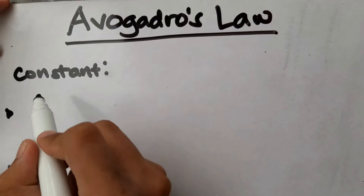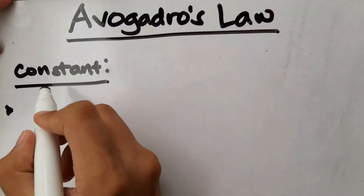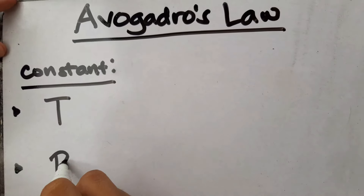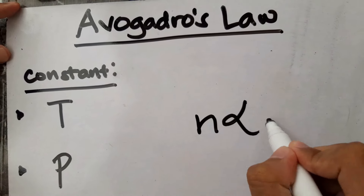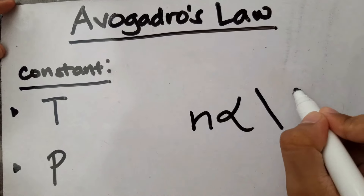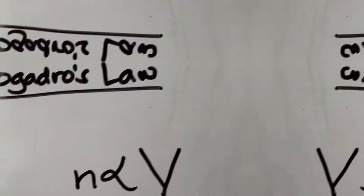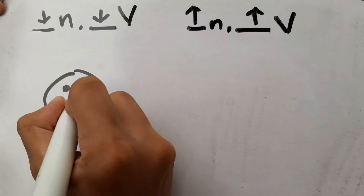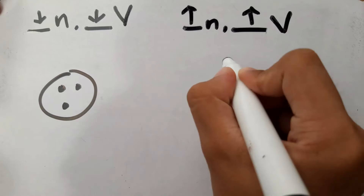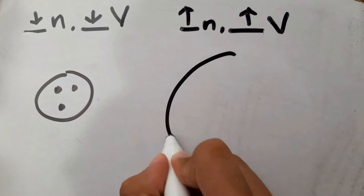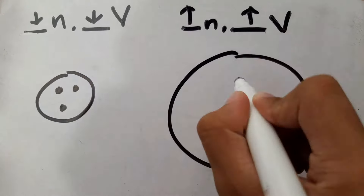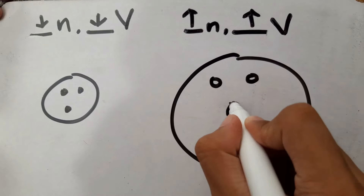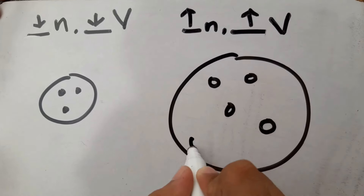Avogadro's Law: Under constant temperature and pressure, the number of particles is directly proportional to the volume. This means that when we increase the number of gas particles in a flexible container, the volume also increases.